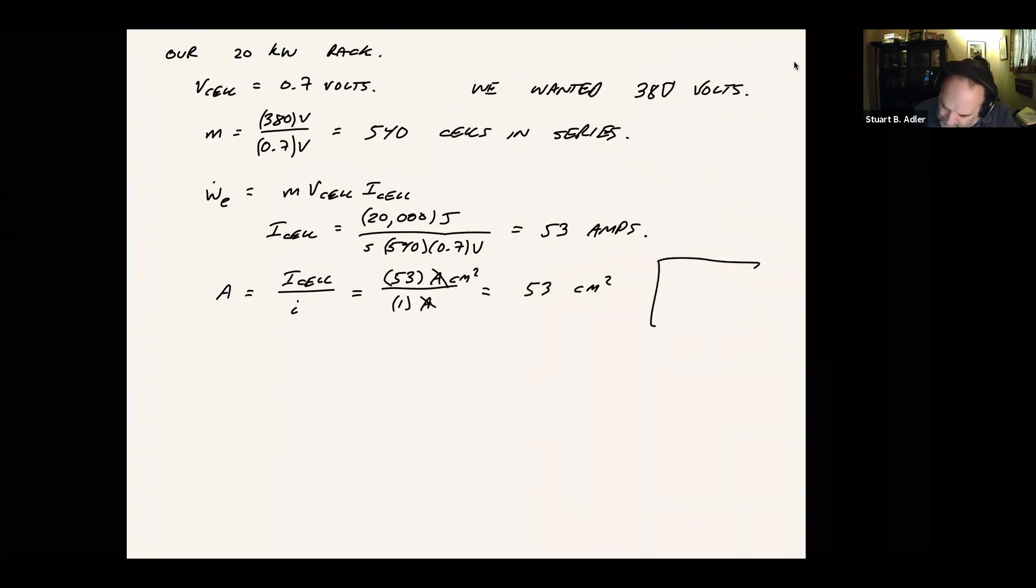So we're talking about a cell with an active area, you might have a cell that looks like this. The area of the cell, if it's a square cell, this would be about 7 centimeters. Or about, like that big, something like that. Imagine a cell this big, a couple inches, three inches.